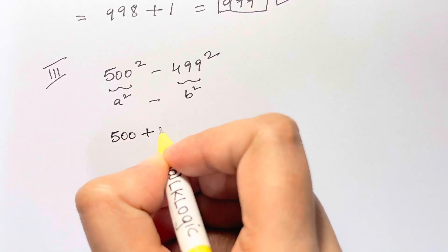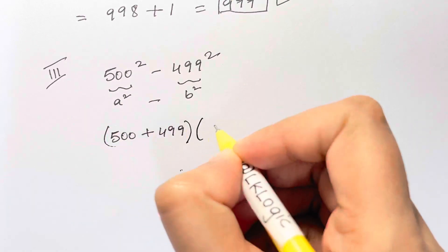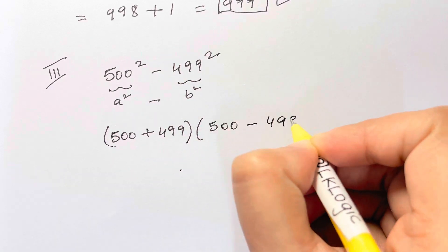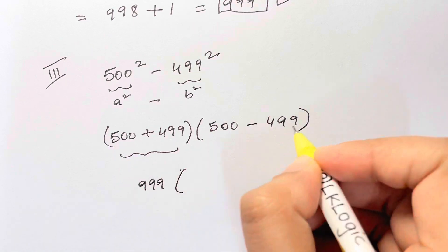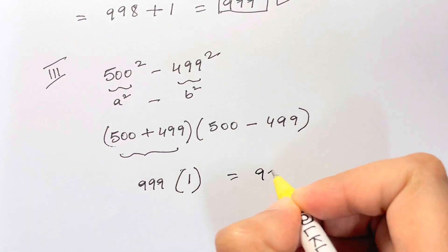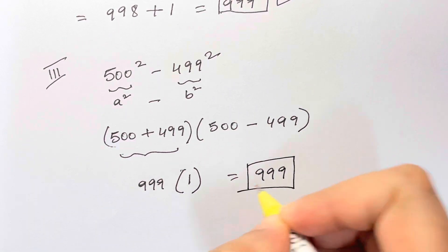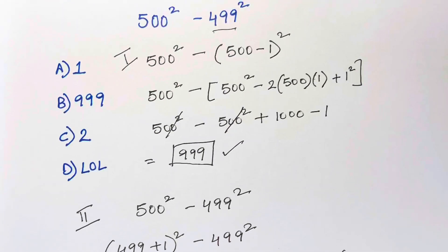So 500 plus 499 gives 999, and 500 minus 499 is 1, so that gives us the answer of 999. So which method do you feel is super easy? Let me know in the comments.